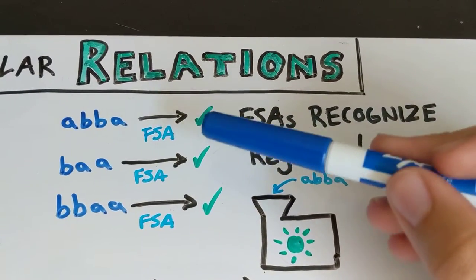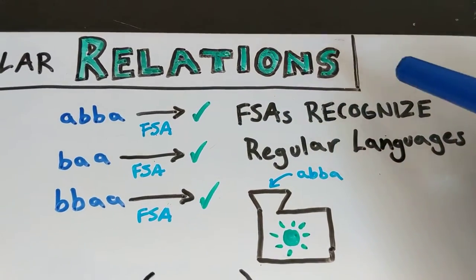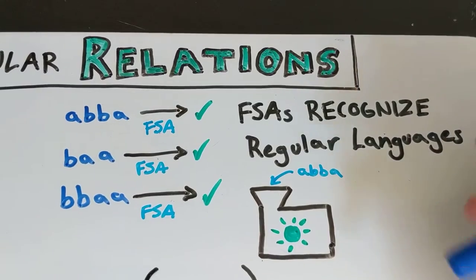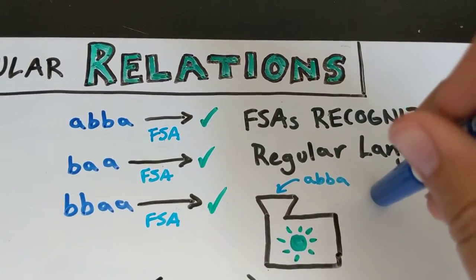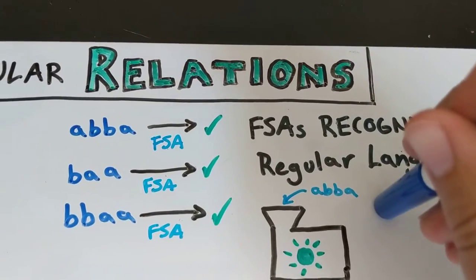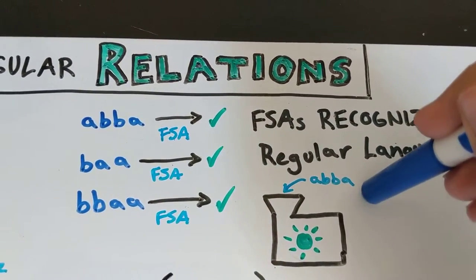They're not necessarily creating strings. We have talked about finite state automata as something where you can use them to generate strings but really what you're doing is recognizing strings with a finite state automaton.